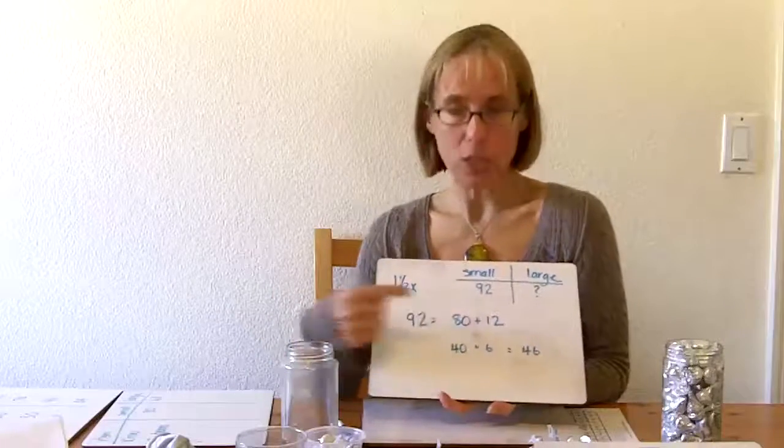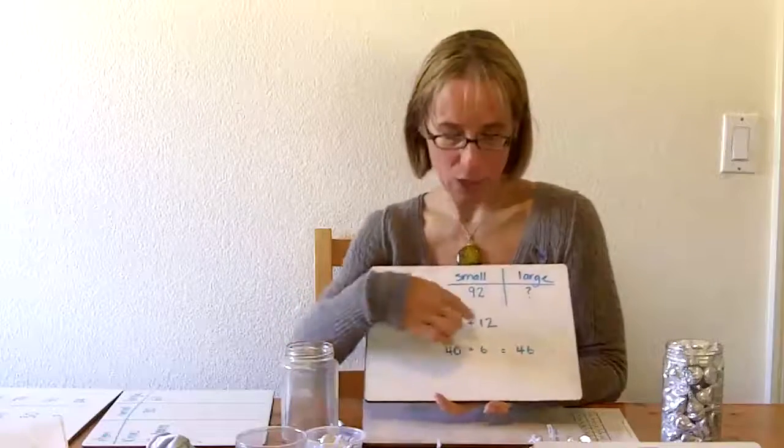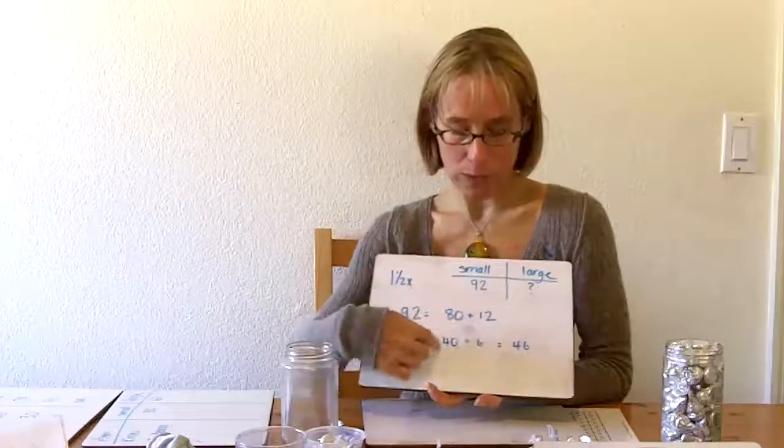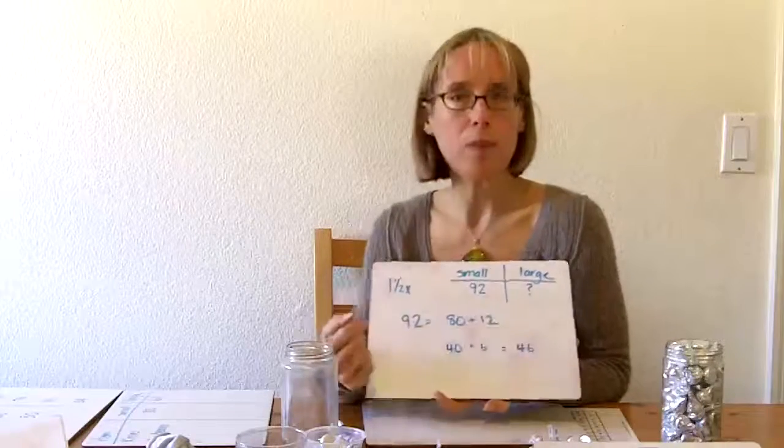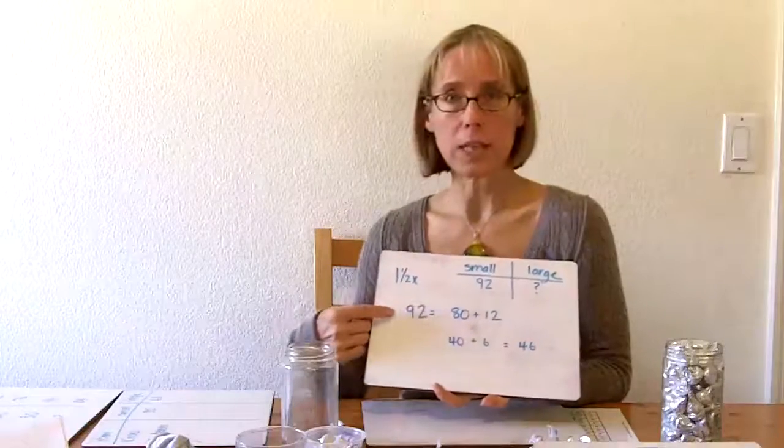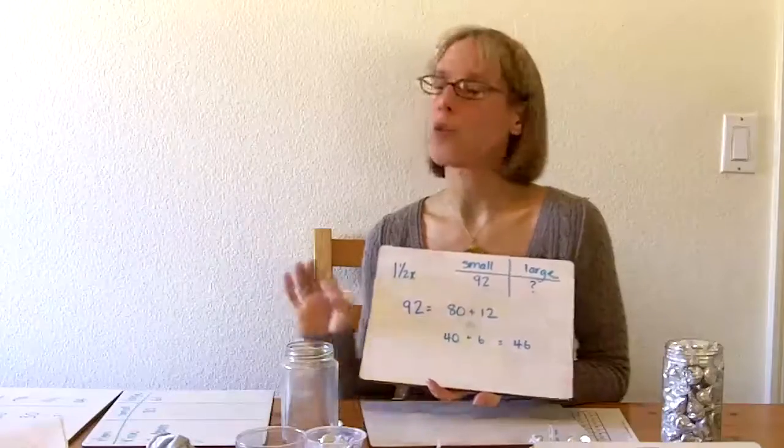We broke 92 into two numbers that she was comfortable with: 80 and 12. She was able to take half of each one of those numbers and come up with 46. She then added the 46 to the 92, and she came up with her estimate for the large jar.